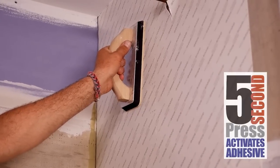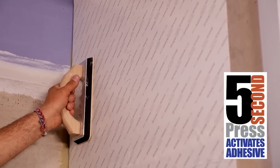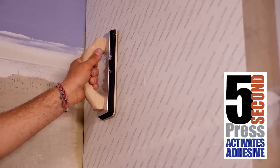A firm five-second press with a grout float activates Musclebound's unique adhesive and permanently adheres the mat to the shower wall backer board.